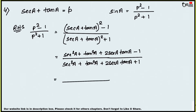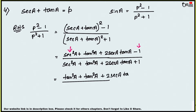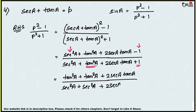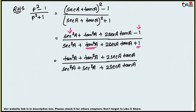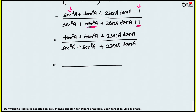In the numerator, sec²a - 1 = tan²a, so the numerator becomes tan²a + tan²a + 2 sec a tan a = 2tan²a + 2 sec a tan a. In the denominator, tan²a + 1 = sec²a, so the denominator becomes sec²a + sec²a + 2 sec a tan a = 2sec²a + 2 sec a tan a.